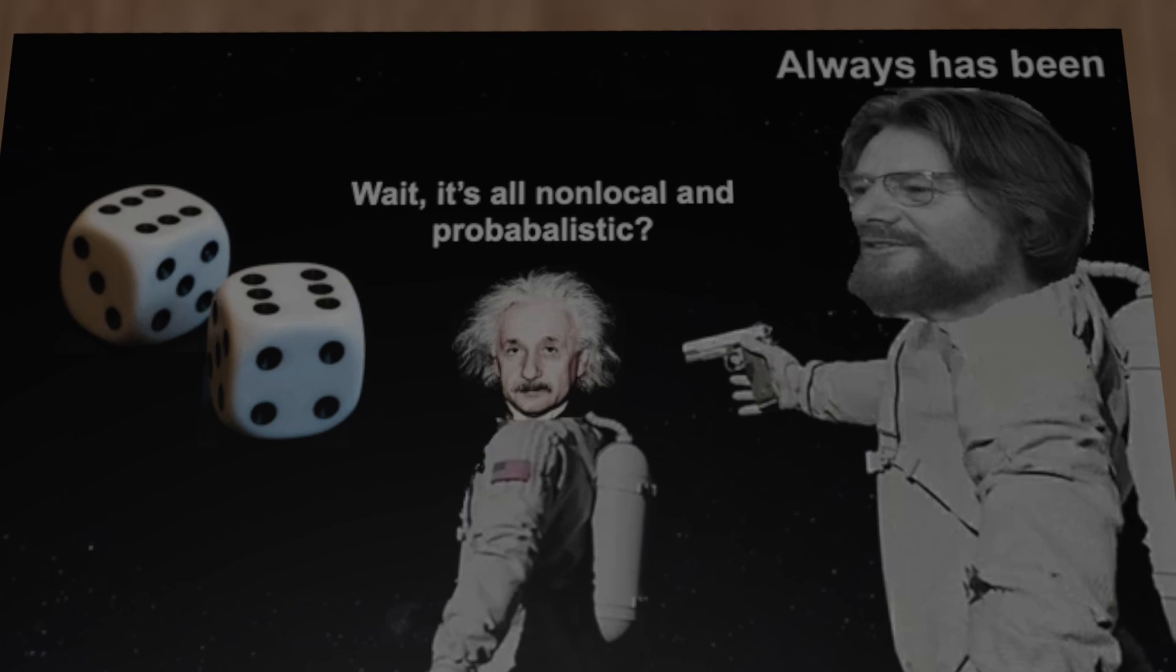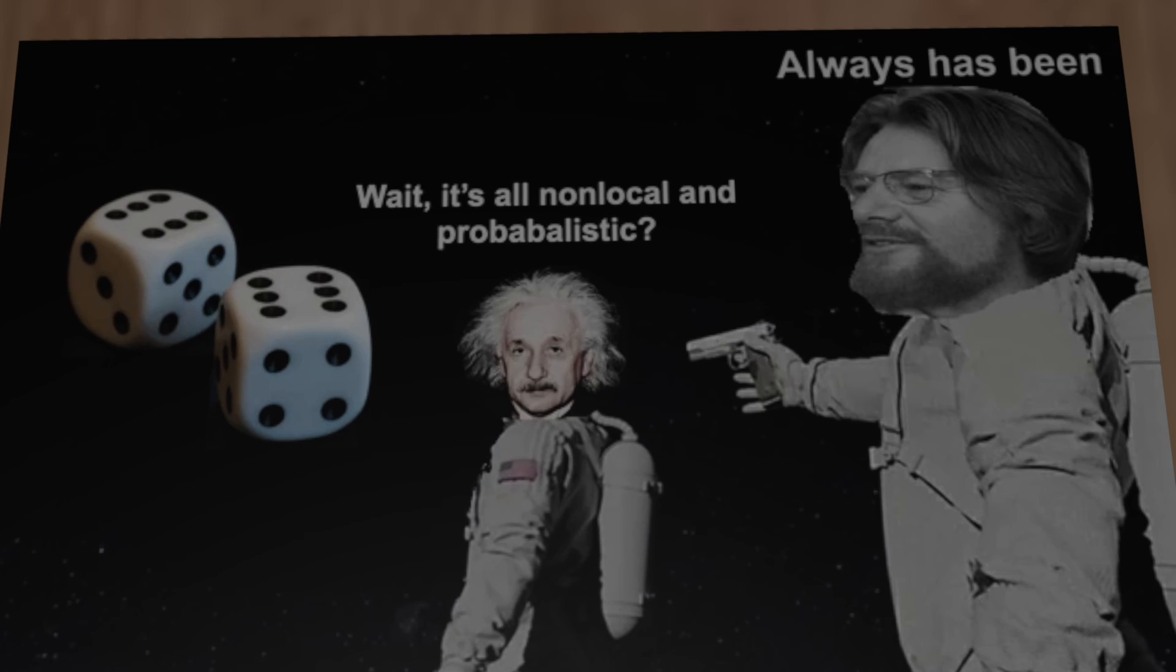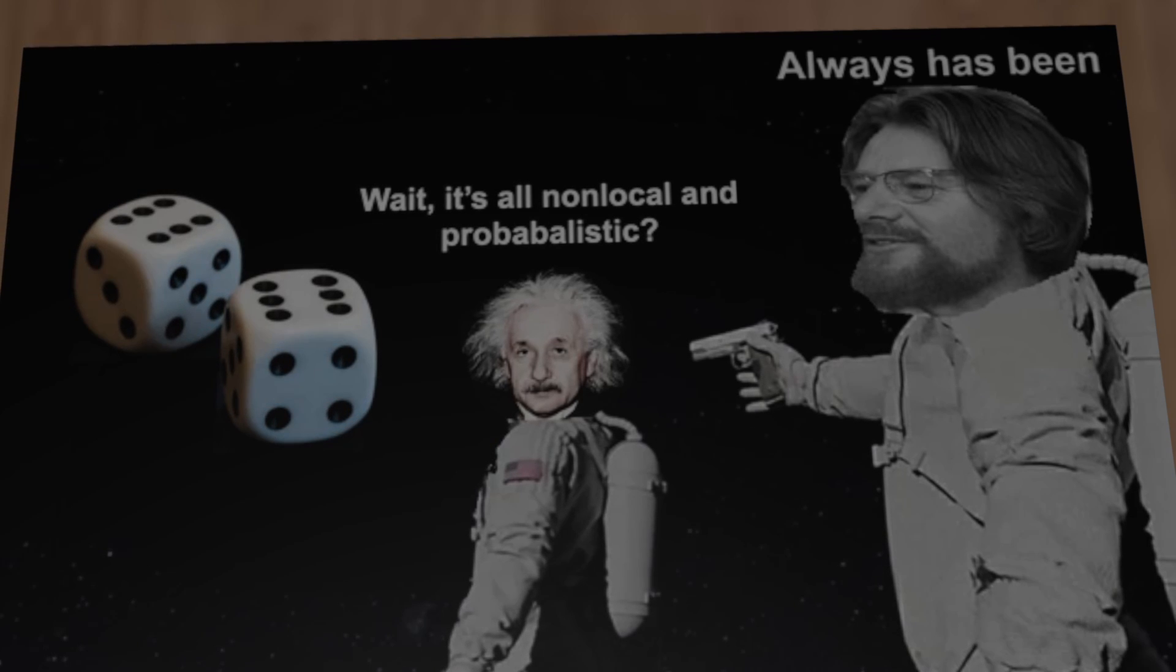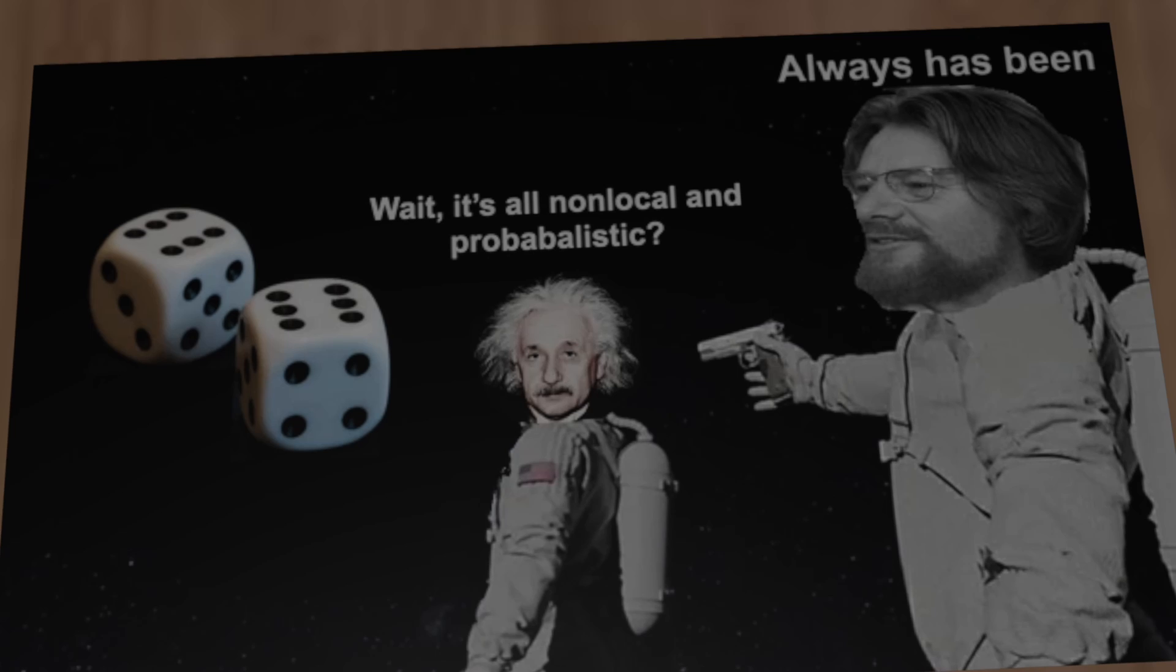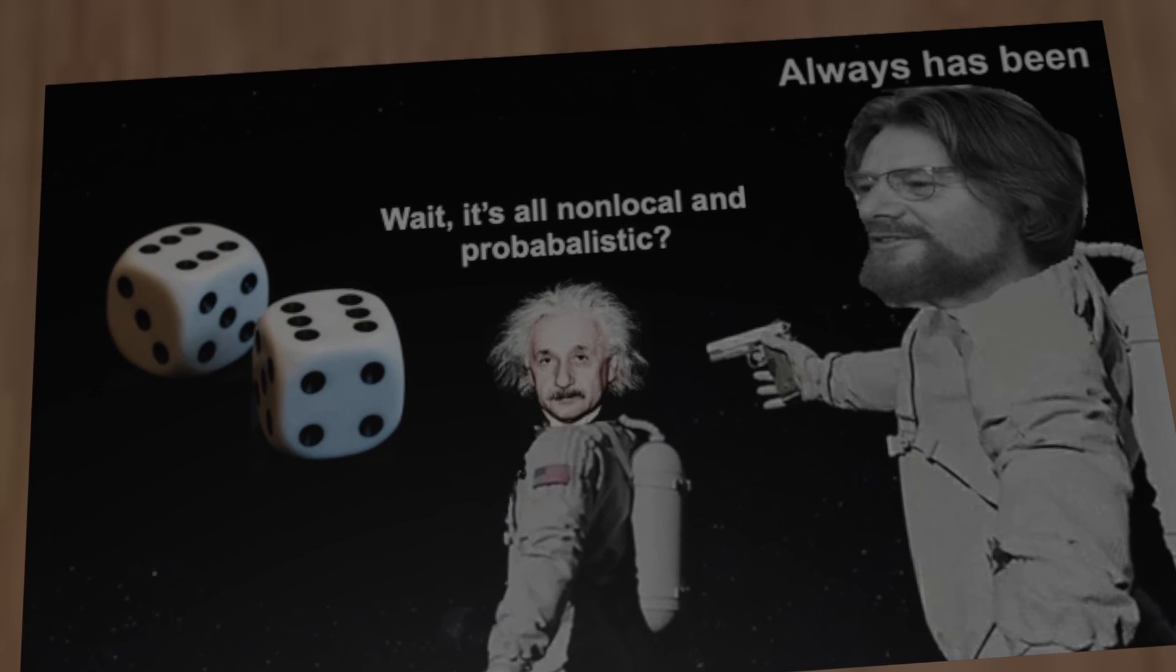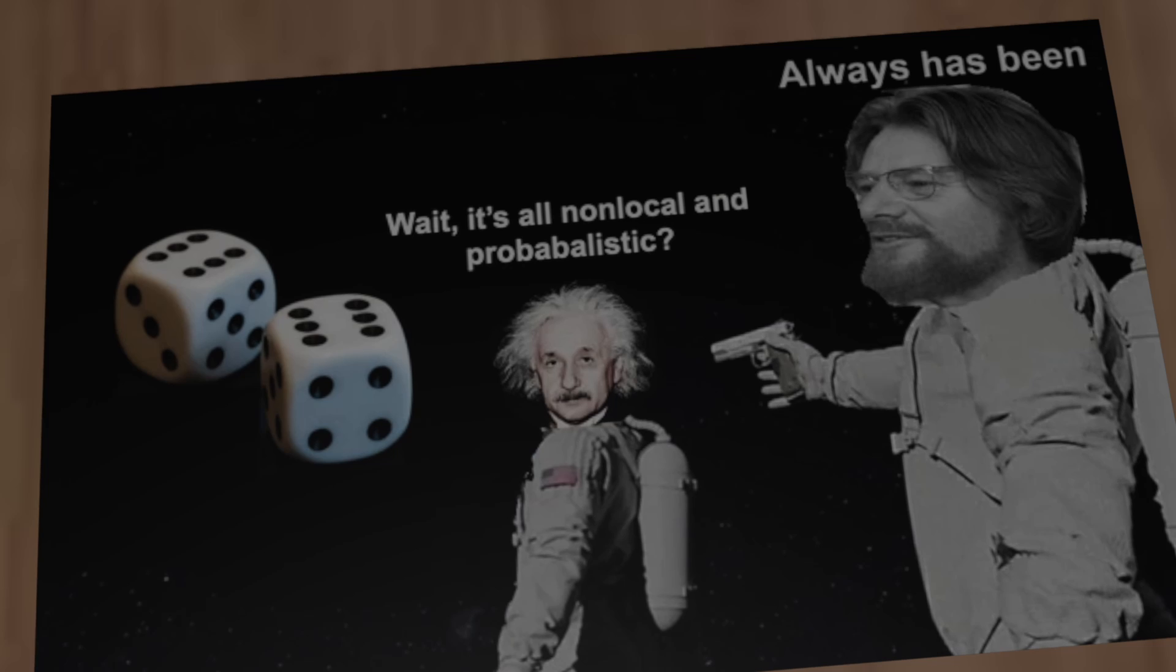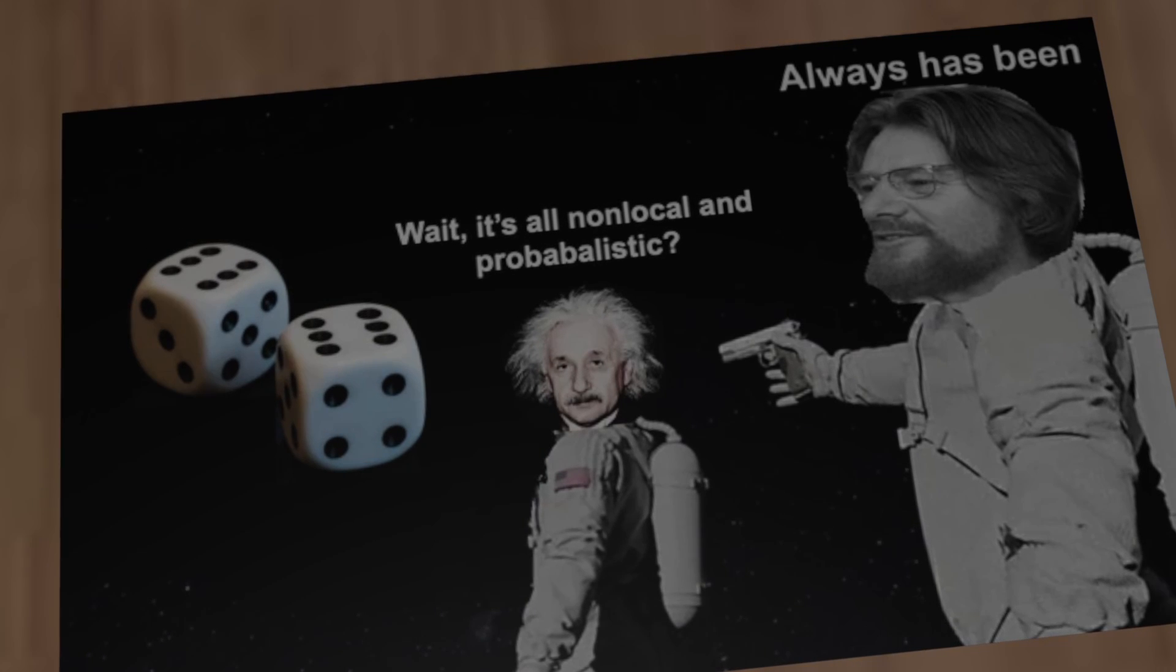Einstein believed what's called local realism, the idea that objects are only influenced by their surroundings and cannot affect each other instantaneously at a distance, and realism, the belief that physical properties exist before measurements. That is, there are so-called hidden variables that determine the outcomes of quantum measurements.